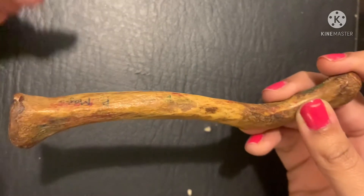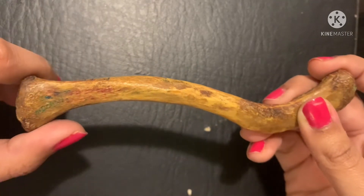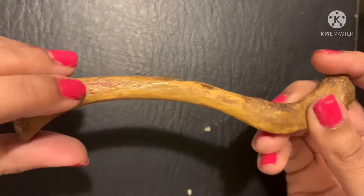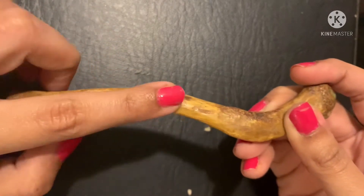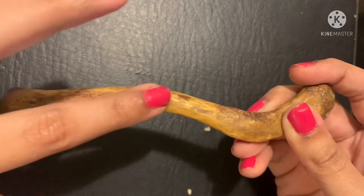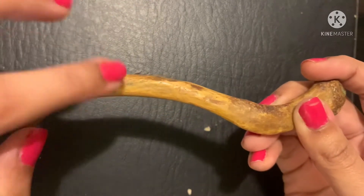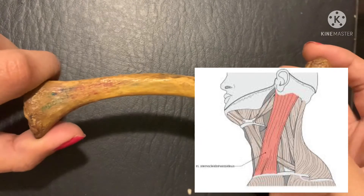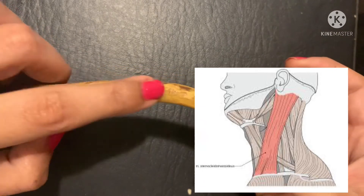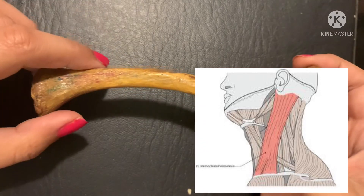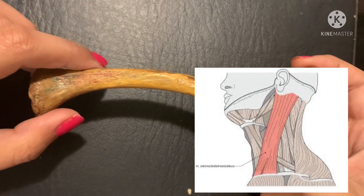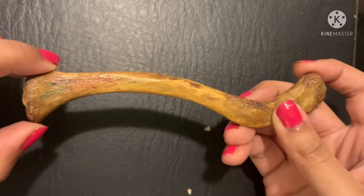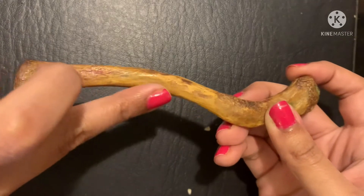The superior surface is responsible — specifically, half of it is responsible — for giving origin to the clavicular head of the sternocleidomastoid. The sternocleidomastoid is a muscle that travels upward toward the chin and the mastoid process.